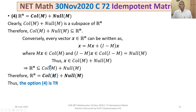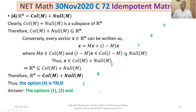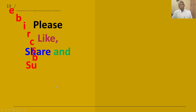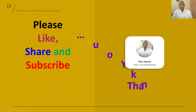In summary, only Option 3 is not true. Therefore Options 1, 2 and 4 are true. That concludes the discussion of this problem from the section Linear Algebra, based on the properties of idempotent matrices and their eigenspaces. I hope you have understood the solution. I wish you all the best. Thank you.